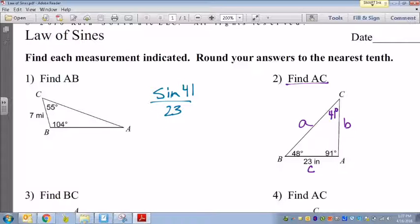My goal is to find side AC, which is this side right here. Let's use angle B. So that's sine of 48 degrees, because that's angle B, and side B we don't know yet.